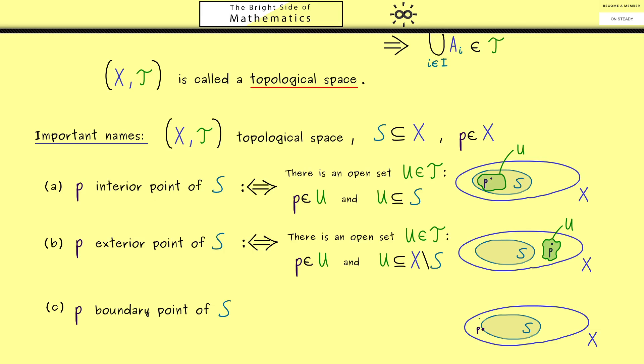However, of course, we can also immediately describe this with open sets U. It simply means that no matter which open set U we choose, we always have an overlap with S and the complement of S.